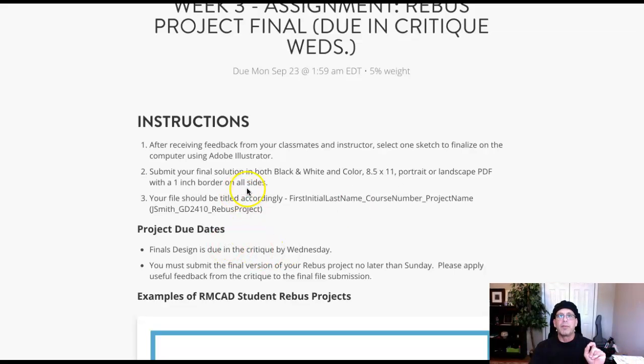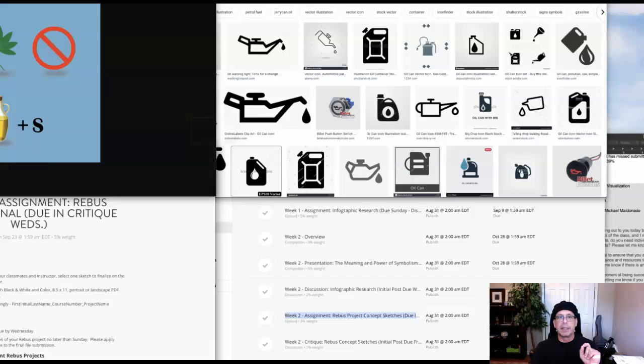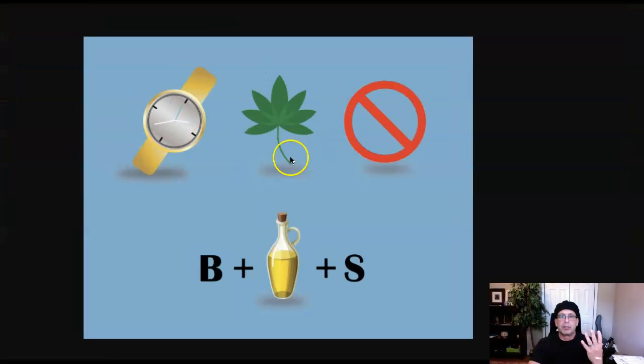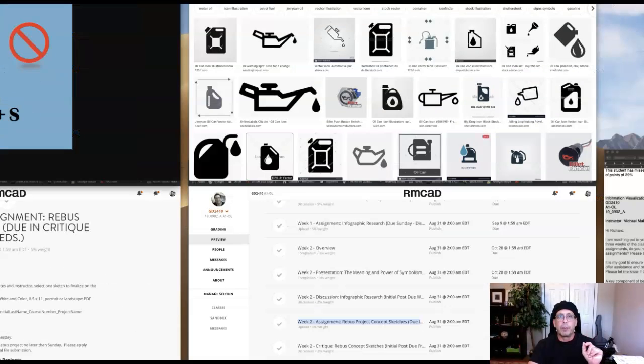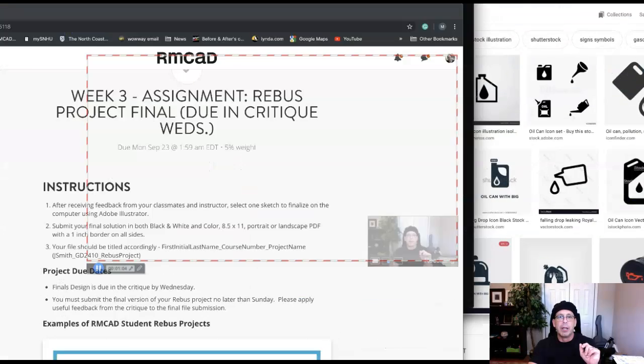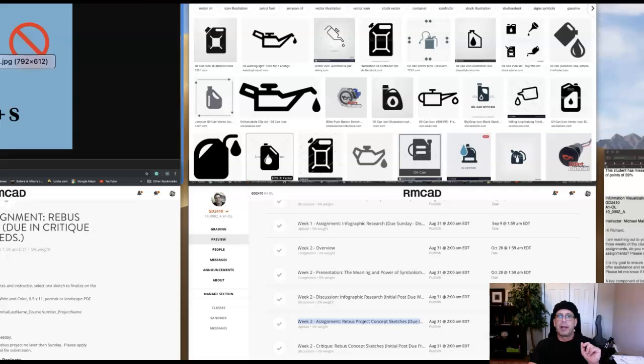But this doesn't look like 8.5 by 11 to me. I might be wrong, I don't know, it just looks like a little bit more towards a square format. So make sure you're at 8.5 by 11. Also include a one inch border on all sides. Just to be true, I would just add a little kind of stroke right there, just a small line of one inch just to kind of frame this. You can color it all the way to the edge whatever you want, but we need that border in there.